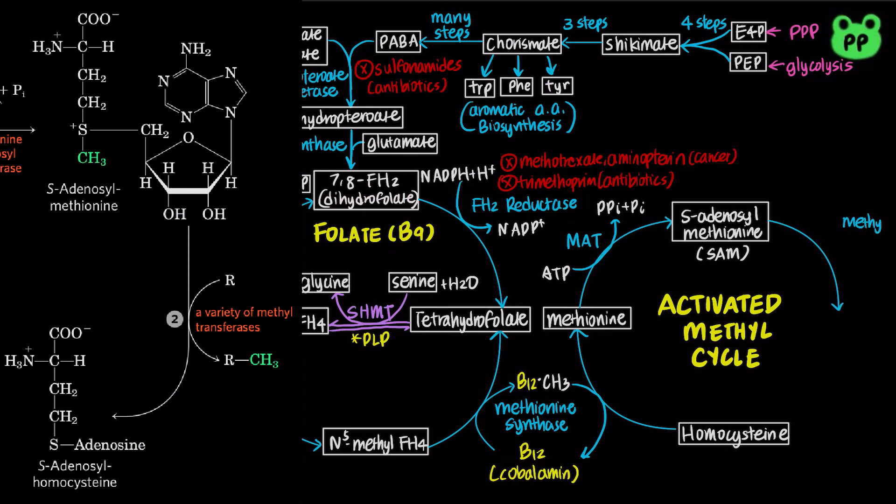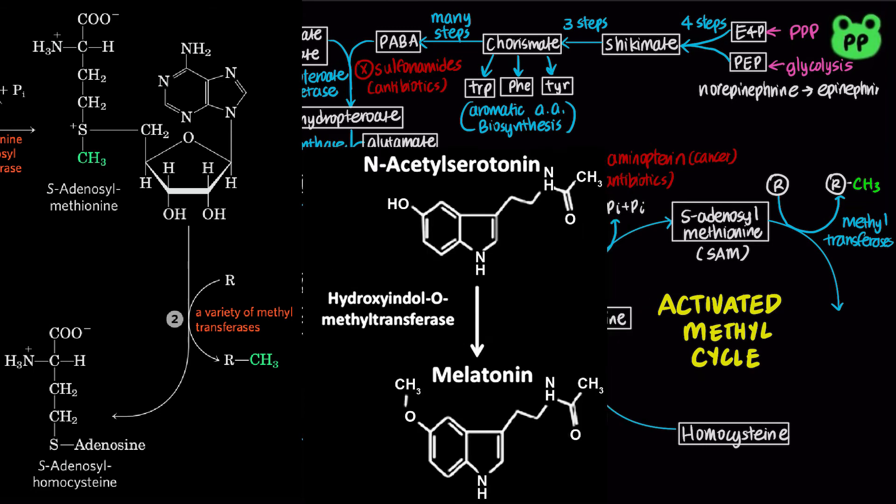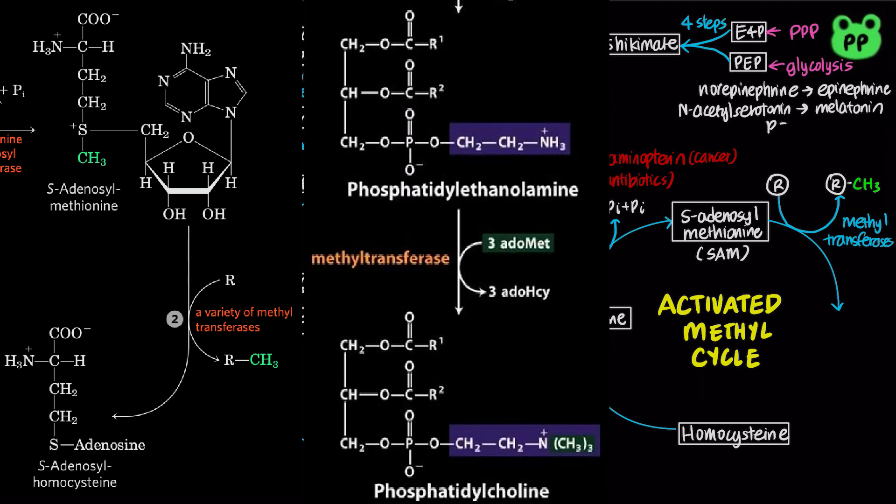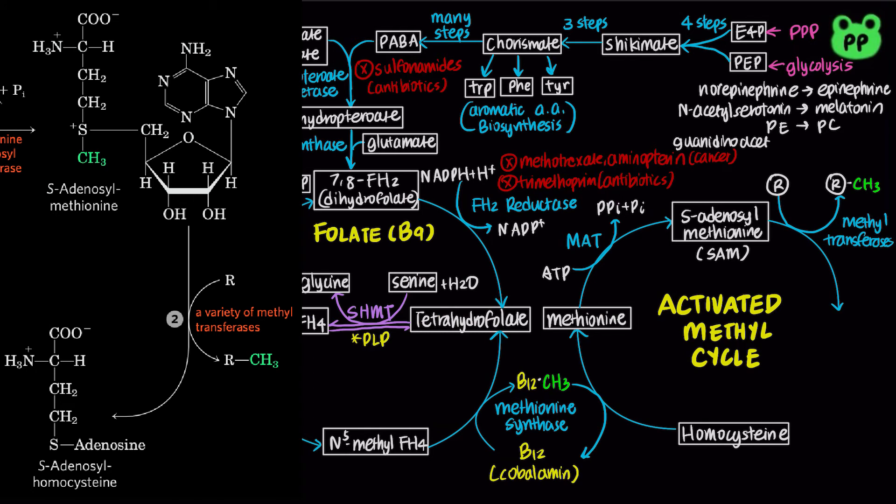The product S-adenosylmethionine, abbreviated as SAM, is a potent alkylating agent in many reactions catalyzed by methyltransferases, including the conversion of norepinephrine to epinephrine, N-acetylserotonin to melatonin, phosphatidylethanolamine to phosphatidylcholine, and guanidinoacetate to creatine. I've covered these pathways in more detail in my previous video on amino acid derivatives.